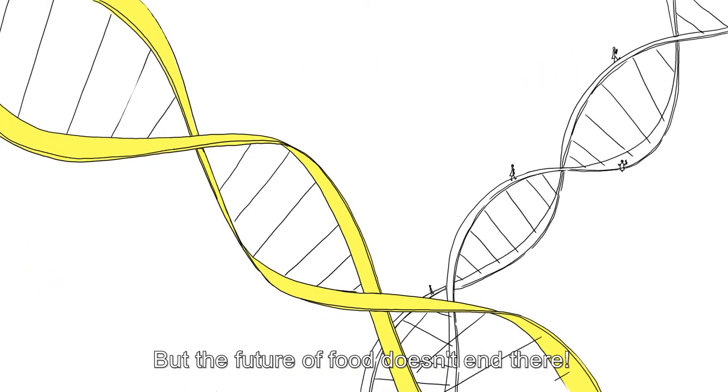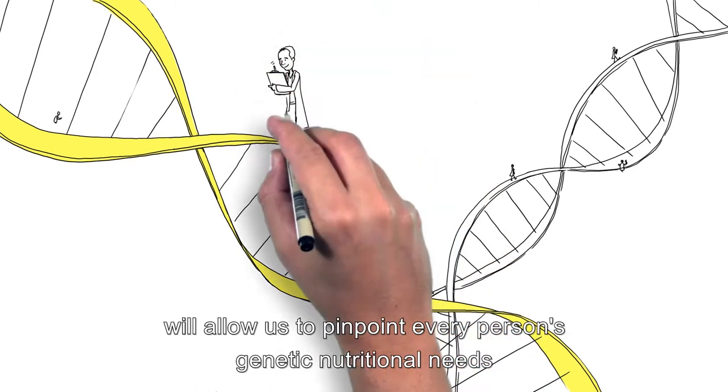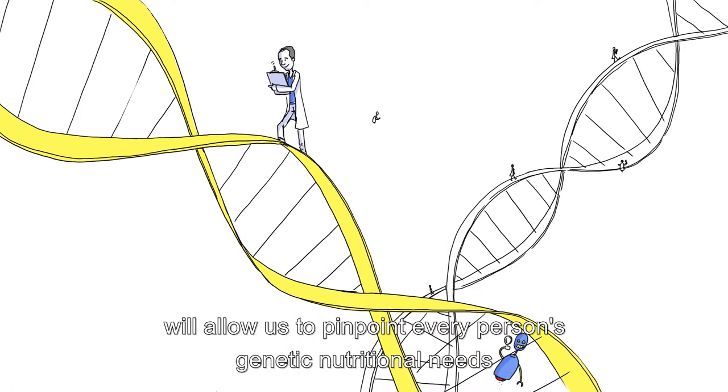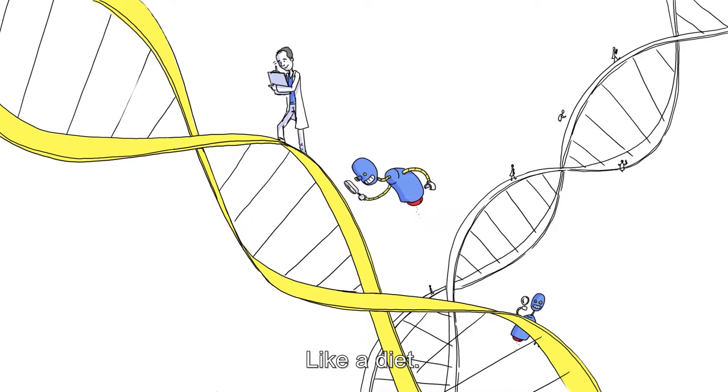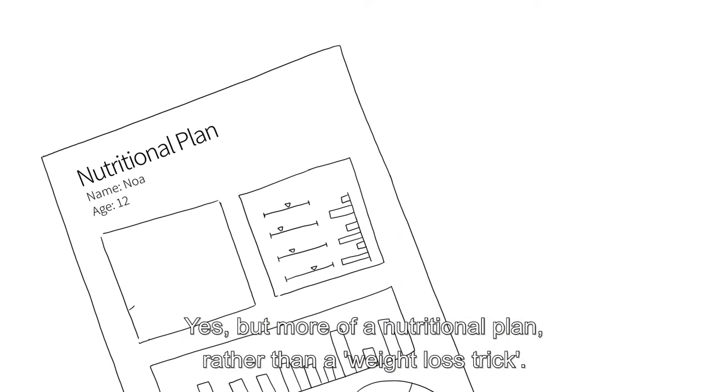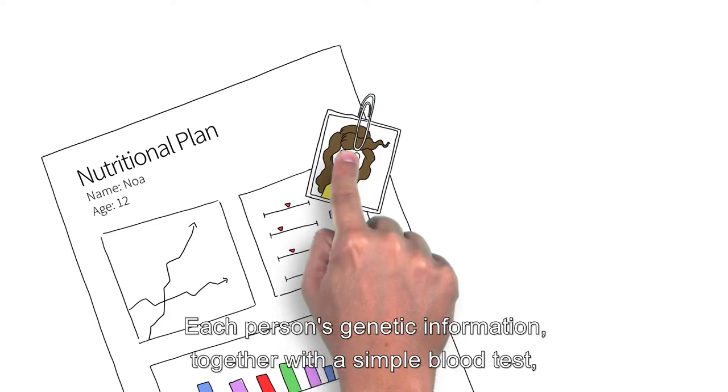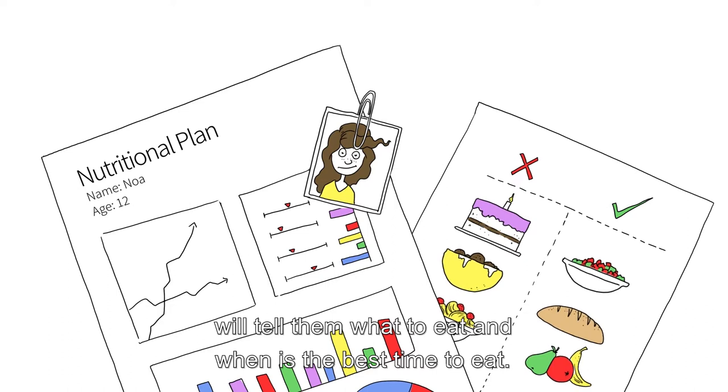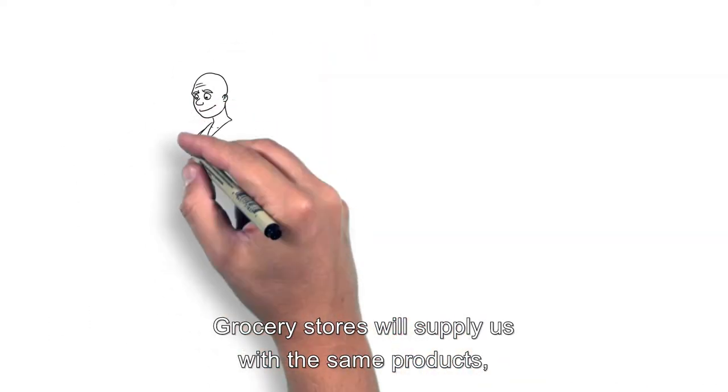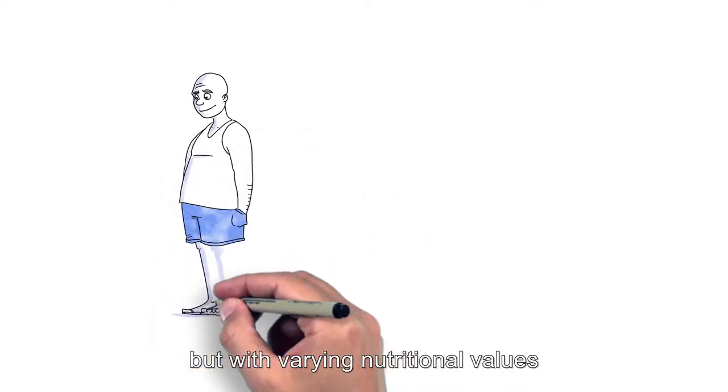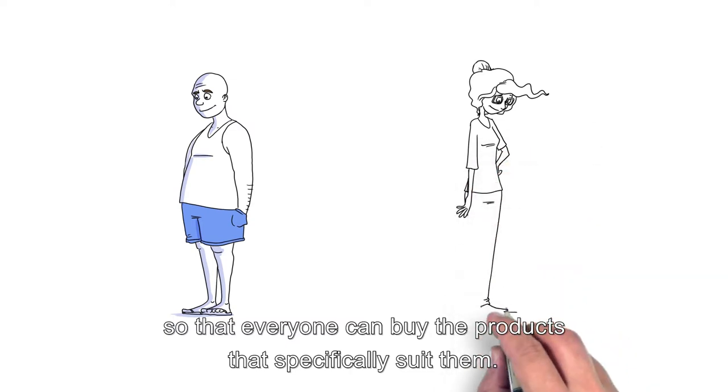But the future of food doesn't end there. The progress in DNA and human genetics research will allow us to pinpoint every person's genetic nutritional needs and to devise a personalized nutritional menu. Like a diet. Yes, but a nutritional plan rather than a weight loss trick. Each person's genetic information, together with a simple blood test, will tell them what to eat and when is the best time to eat. Grocery stores will supply us with the same products, but with varying nutritional values, so that everyone can buy the products that specifically suit them.